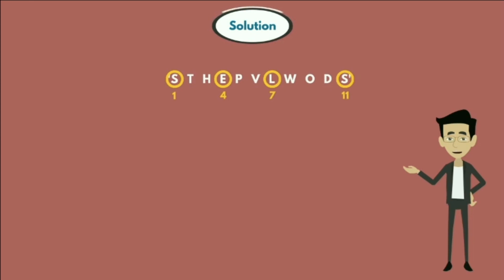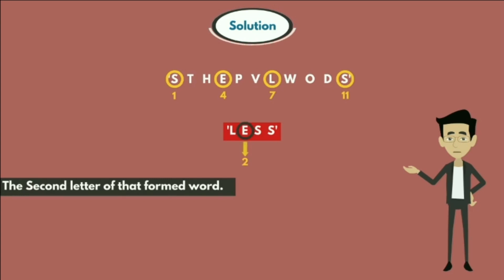So here from these letters we can form a word, and the word formed is LESS. Now in the question they are asking the second letter of the formed word, so it is clear that the letter E is the second letter of the formed word LESS.